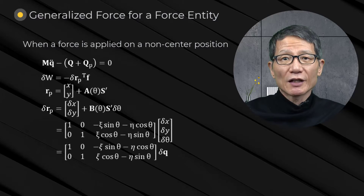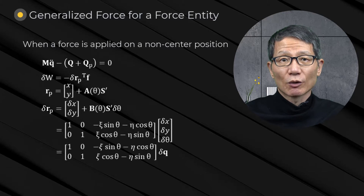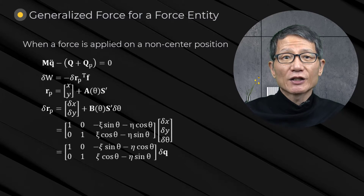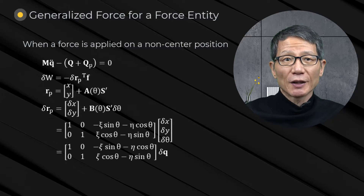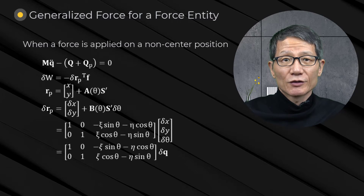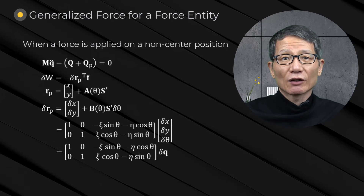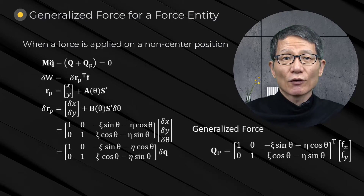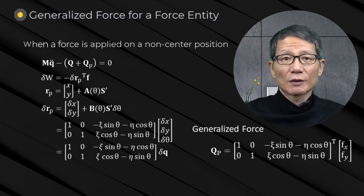The position vector of the application point p can be obtained in terms of the generalized coordinates as follows. Taking the variation of this position vector gives the virtual displacement. Substituting the variation into the virtual work expression gives the generalized force due to the applied force p at point p.